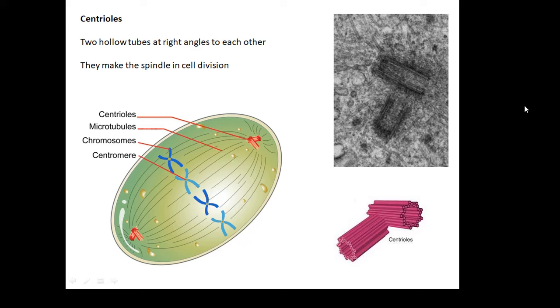Centrioles. They're involved in cell division when the cell splits. Mitosis, usually. Two hollow tubes at right angles to each other are the centrioles. Looks to me like a couple of bits of macaroni. They make the spindle in cell division. They go to either side of the cell, and then all your chromosomes line up, and then all kinds of crazy things happen, which we don't need to know about. But they're involved in cell division, the centrioles.